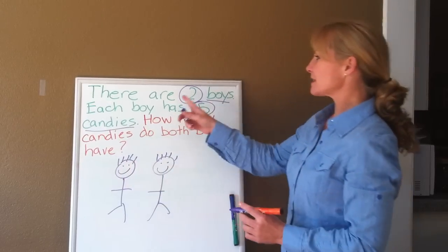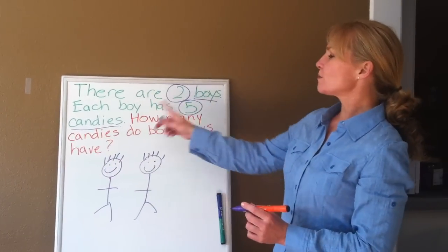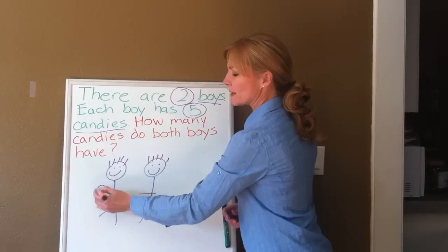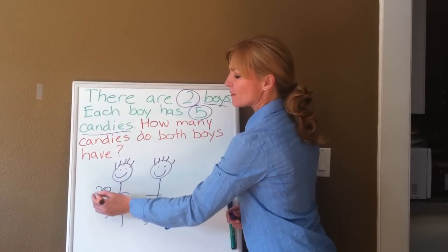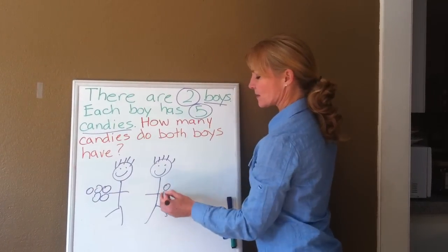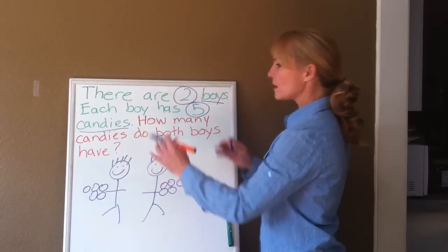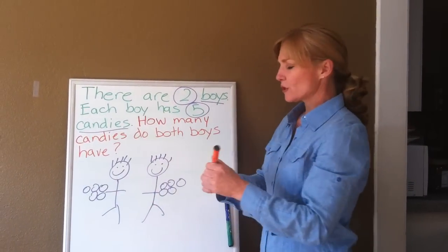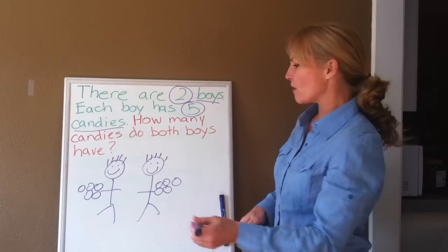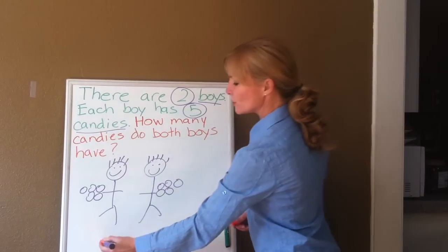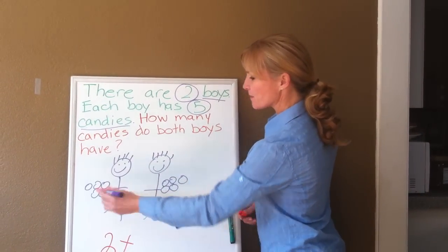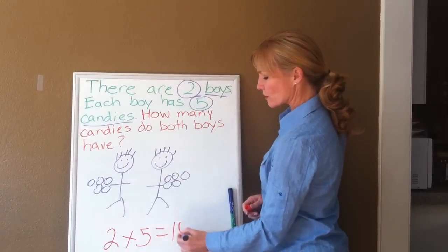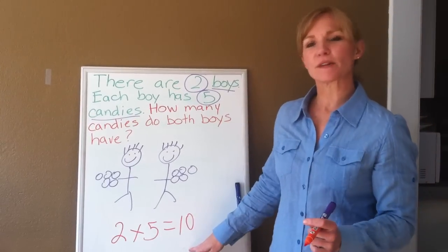Then the next question is: there are two boys, each boy has five candies. So you would give each boy five candies. So now we're turning this whole question into a picture. So now your children will go, oh, two times each of them have five equals a total amount of 10 pieces of candy.